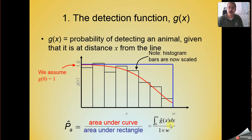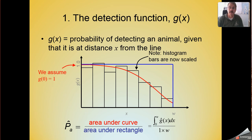I showed you how to calculate the area under the curve by using the integral, and the calculation of the area under the rectangle is calculated simply as the base length w times the height 1. So that's how we use the detection function to help us estimate the probability of detecting animals and thereby adjusting the number that we see for this detectability.